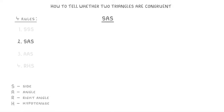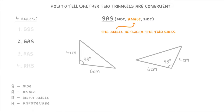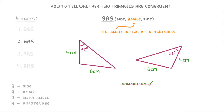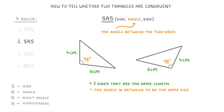The next rule, SAS, stands for side, angle, side. And importantly, because the A is in the middle, it's referring to the angle in between the two sides. So in these two triangles, because these two sides of each triangle are the same length, and the angles between those two sides are the same size, these two triangles must be congruent. Whereas if we were given this angle over here instead, even if the angles were the same size, it still wouldn't count as proof that the triangles are congruent, because the angle is no longer in between the two same-length sides. Of course, these two triangles may well still be congruent — it's just that we can't prove it using this particular rule. So just remember that for this rule, you need two sides that are the same length, and the angle in between them has to be the same size.